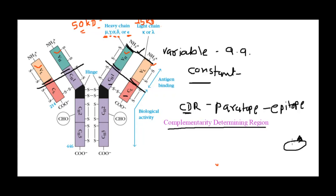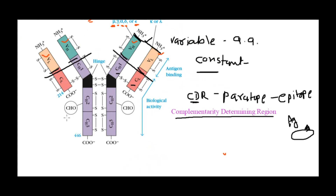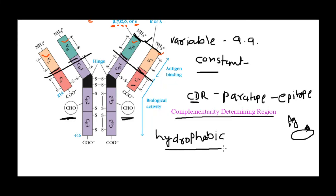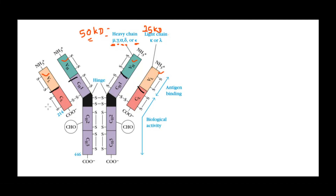We can also see sites of glycosylation in the antibody. One possible reason for glycosylation is that antibodies, being protein compounds, may contain many hydrophobic amino acids, which would reduce their solubility in blood plasma. Glycosylation increases solubility, which may be why these glycosylation sites are present — so the antibody can remain soluble in blood plasma. The upper region of the antibody is called the Fab region, and the lower region is called the Fc region.